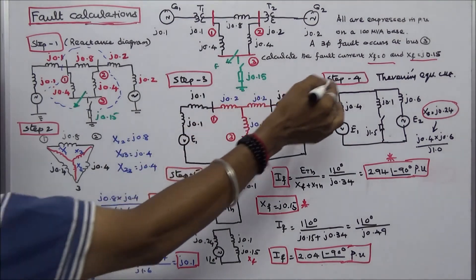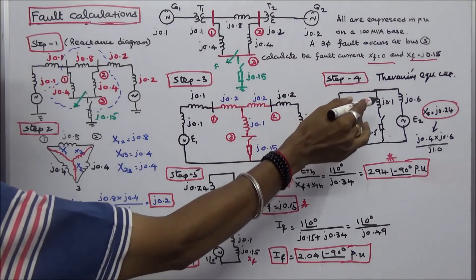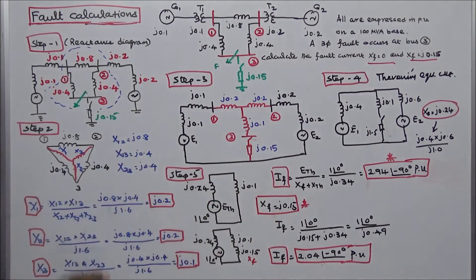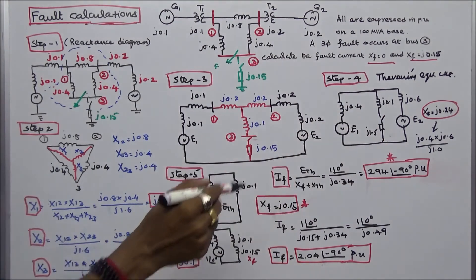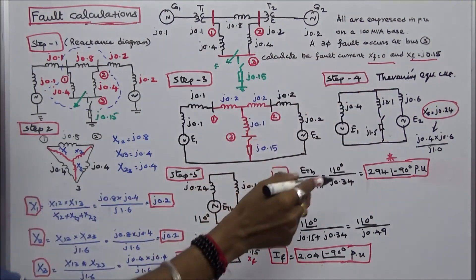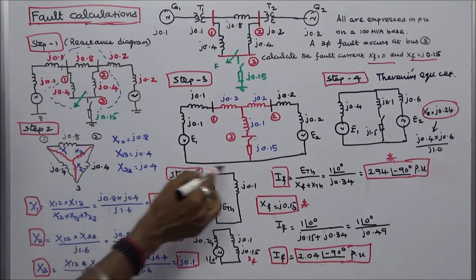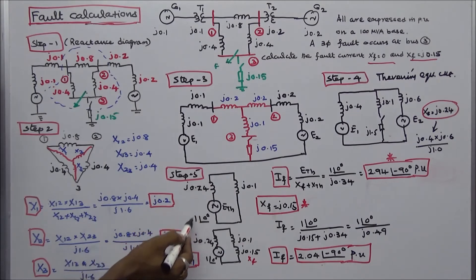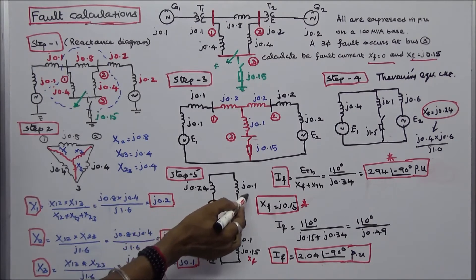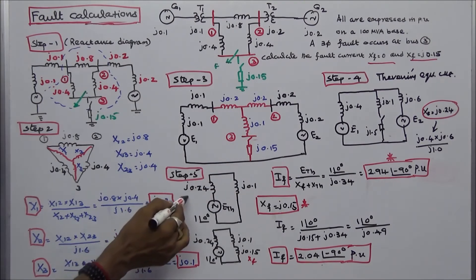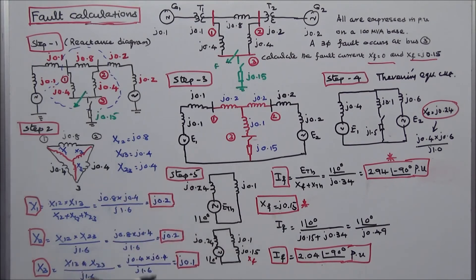Step 4: draw the Thevenin equivalent circuit. Here J.4 and J.6 are connected in parallel. The effective reactance is J.4 × J.6 divided by (J.4 + J.6), which equals J.24. In Step 5, redrawing the circuit gives E-Thevenin equal to 1 angle 0, with J.24 and J.1 in series. Therefore, X-Thevenin equals J.24 plus J.1, which equals J.34.